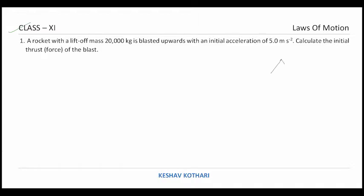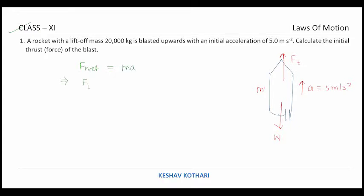For this problem, consider the rocket which we wish to launch. There is a thrust force Fd acting upward, the weight of the rocket acting downward, and the rocket acquires an acceleration of 5 m/s². Taking mass of rocket as m, the net force equation gives: thrust force minus weight equals ma, so thrust force equals m(g + a).